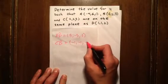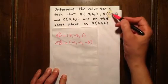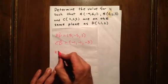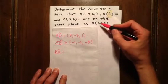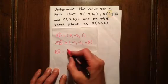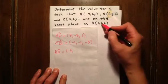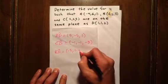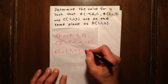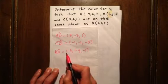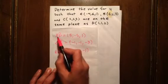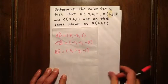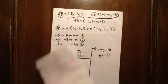And the vector BD is 1 minus 6, 1 minus y, 2 minus 3. So we need for this vector to be a linear combination of these two.